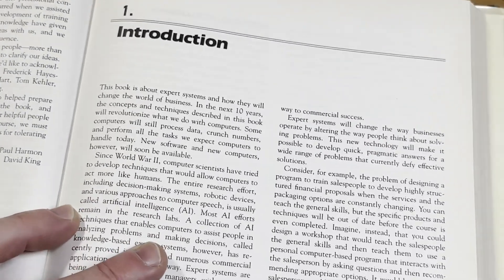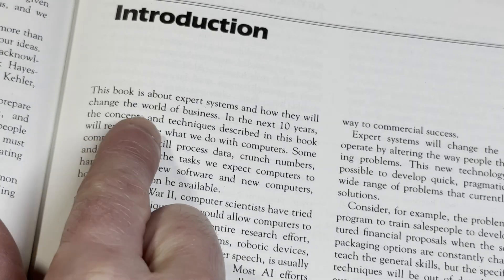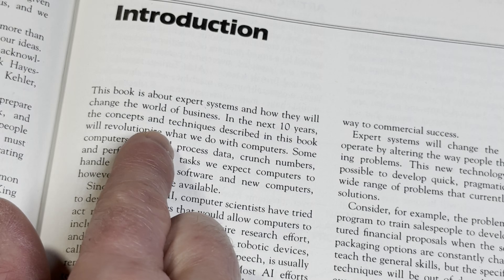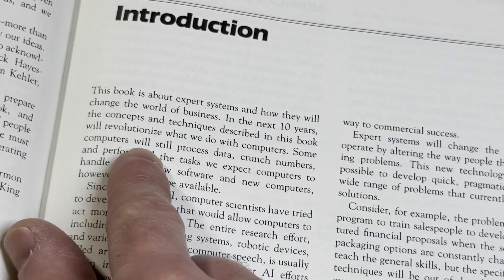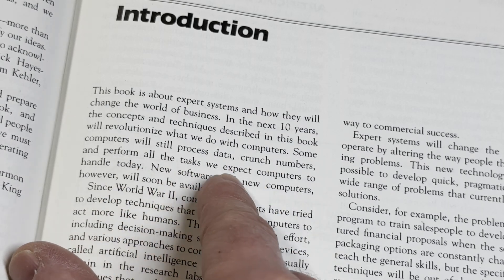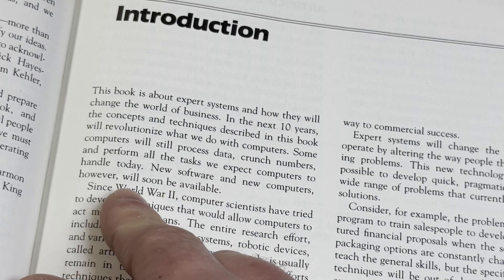Let's read the introduction here. It says, This book is about expert systems and how they will change the world of business. In the next 10 years, the concepts and techniques described in this book will revolutionize what we do with computers. Some computers will still process data, crunch numbers, and perform all the tasks we expect computers to handle today. New software and new computers, however, will soon be available.